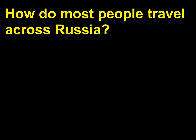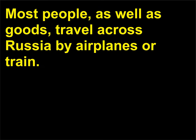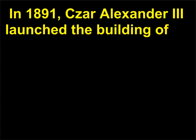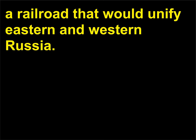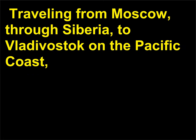How do most people travel across Russia? Most people, as well as goods, travel across Russia by airplanes or train. In 1891, Tsar Alexander III launched the building of a railroad that would unify eastern and western Russia, traveling from Moscow, through Siberia, to Vladivostok on the Pacific coast. The Trans-Siberian Railroad was opened in 1904 and is the longest railroad line in the world.